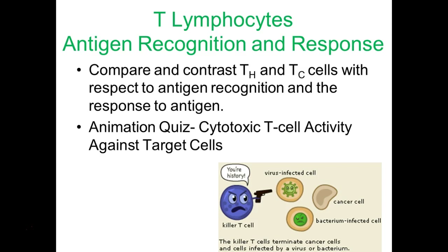Here's a cytotoxic CD8 T cell. If our cells get infected with a virus or bacteria, or become cancerous, those antigens appear on the surface of those cells — and that's how the cytotoxic T cell knows it needs to pull the trigger and eliminate those cells before they can be harmful to the whole organism.